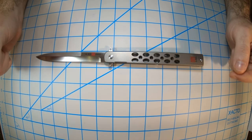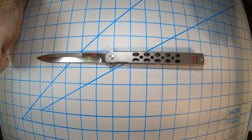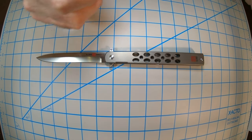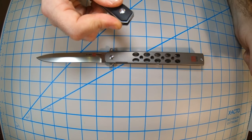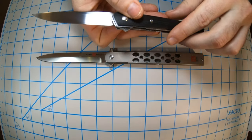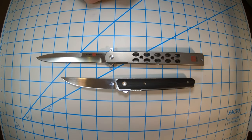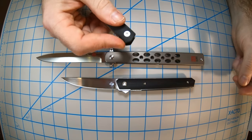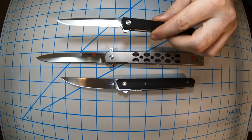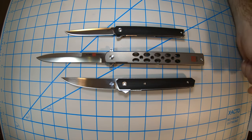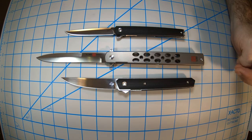So let's compare it to some other knives. This is the Boker Plus Kwaiken Air and this is the CRKT CEO Flipper. As you can see, the Almar Slimline is way bigger than those two knives.